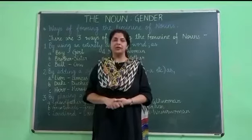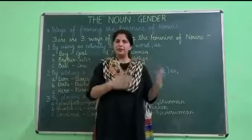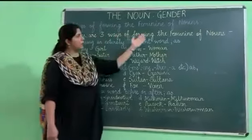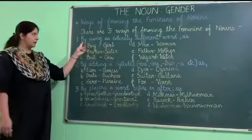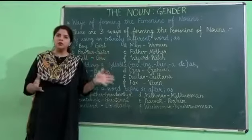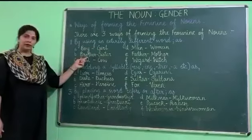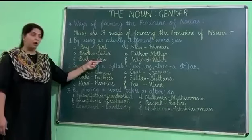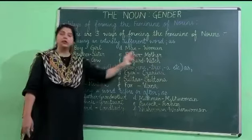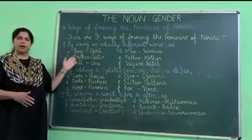Now I am going to teach you how to change the masculine gender to the feminine gender — that is, how to change from the male member of the species to the female member of the species. There are three ways of forming the feminine of nouns. Number one: by using an entirely different word. You are not adding anything to the word; you use a completely new word. For example — boy/girl, brother/sister, bull/cow, man/woman, father/mother, wizard/witch. You have used an entirely different word to change the masculine to feminine.